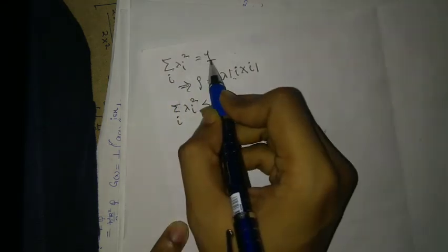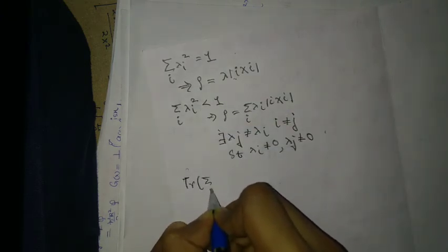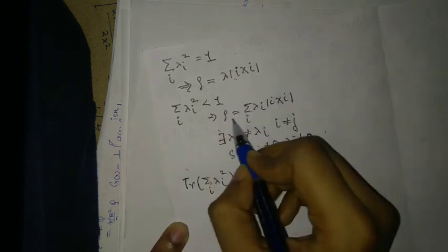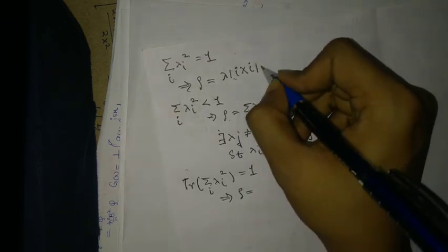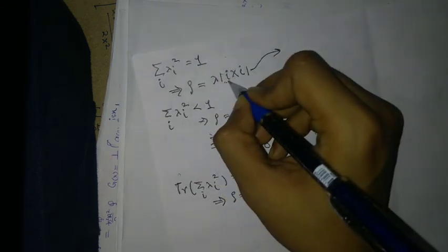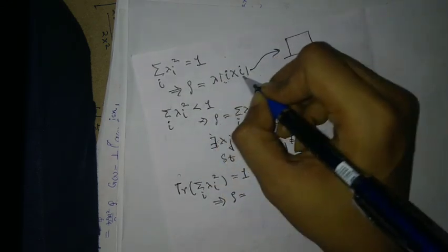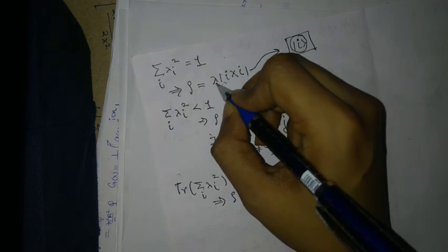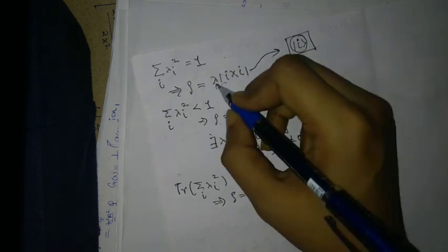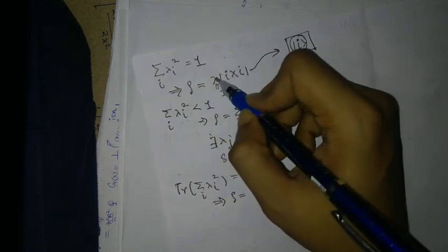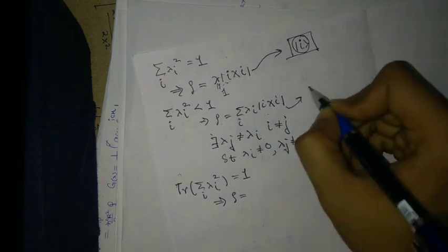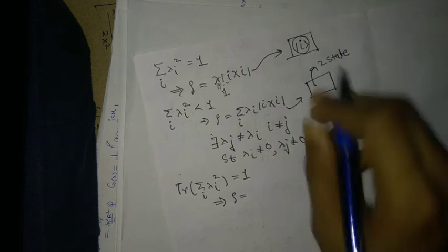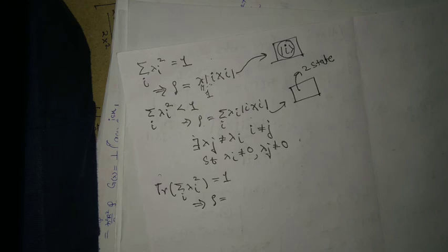To summarize: Tr(ρ²) = Σᵢ λᵢ² = 1 means ρ is a pure state — in the box I have only one state. And λ must equal 1 because there is no summation and normalization forces it. When Tr(ρ²) < 1, the box contains at least two states — that is what it means to be a mixed state, as opposed to a pure state.